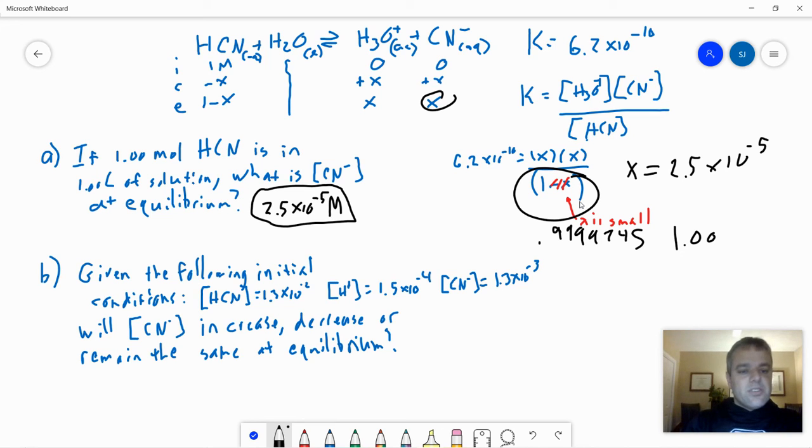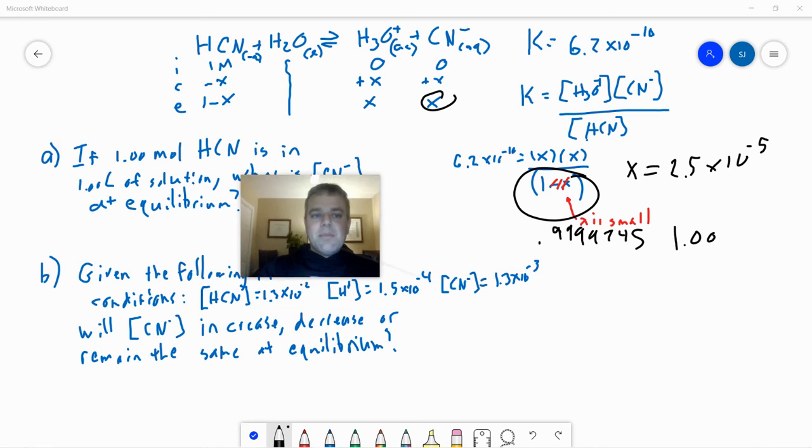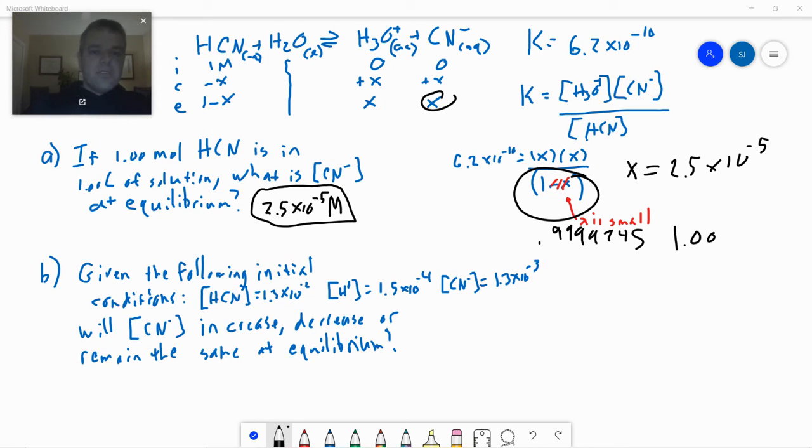Then part B says, given the following initial conditions, will the cyanide concentration increase, decrease, or remain the same at equilibrium? So to do this, we need to calculate Q in order to figure out which direction this reaction is going to shift.